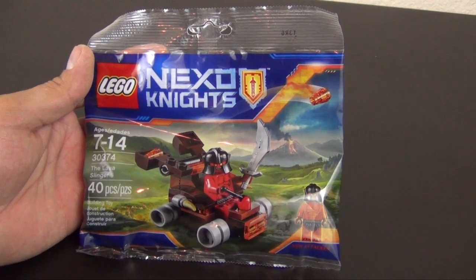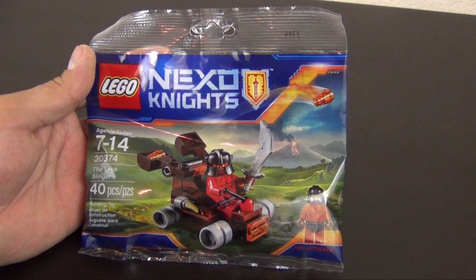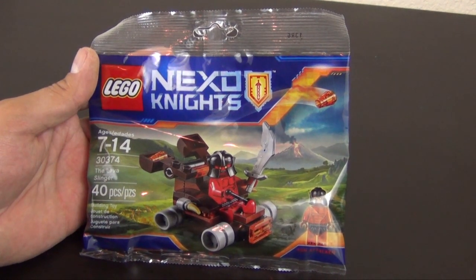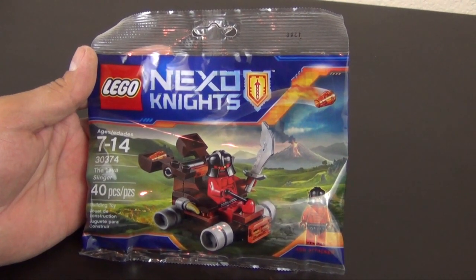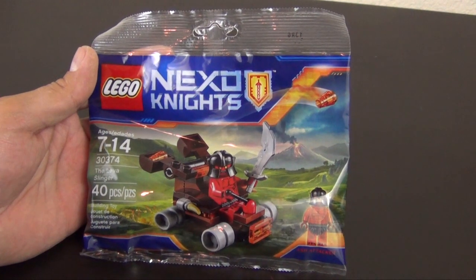Hey everyone, welcome back to The Hidden Brick where today we're going to build the Lego Nexo Knights Lava Slinger Poly Bag. This is set number 30374. Comes with 40 pieces.